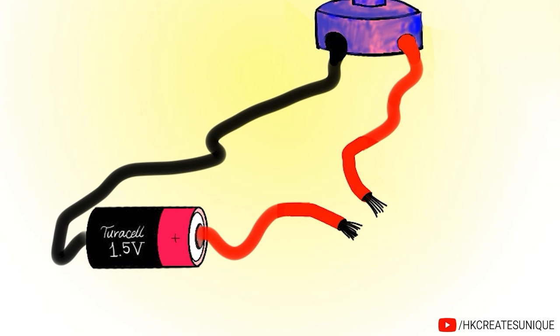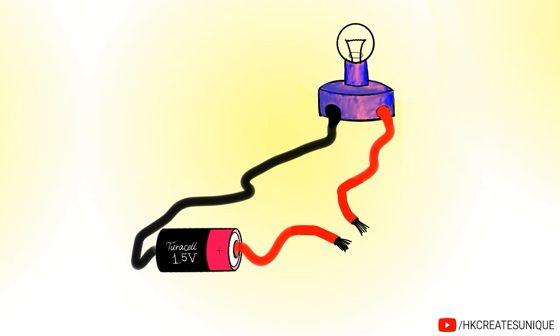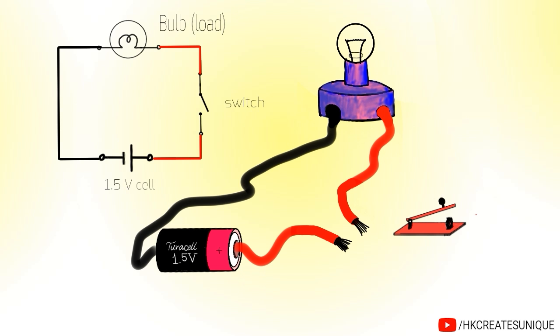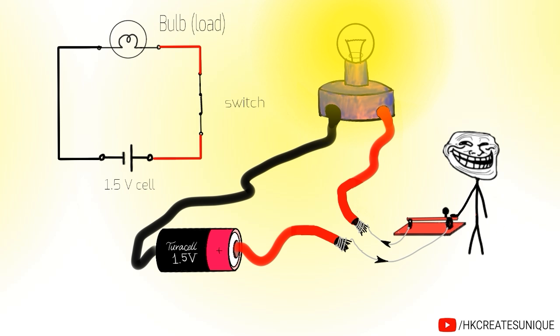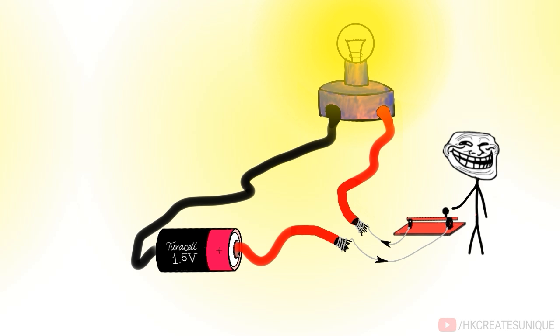But joining and cutting the wire to turn a load on or off is not a practical way to control a load, hence a switch can be used. The switch can be connected in a circuit like this, in series with the bulb. The switch can be set to on position or closed position, and also to off position or open position. This is the best way to turn a load on or off.